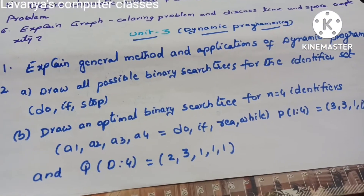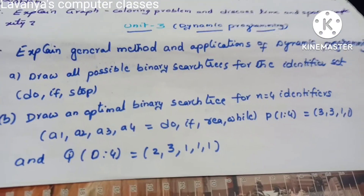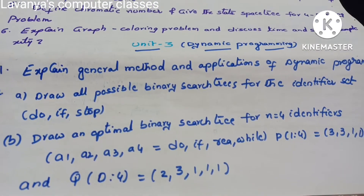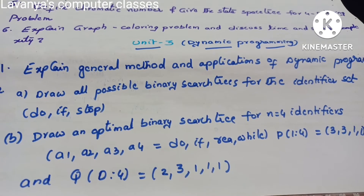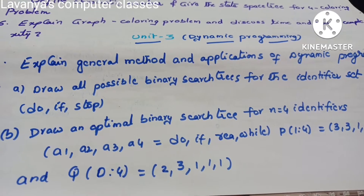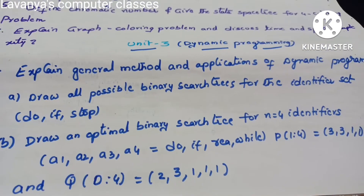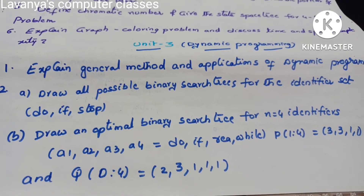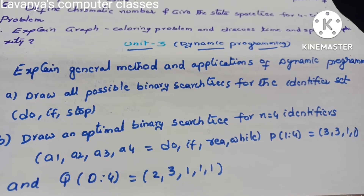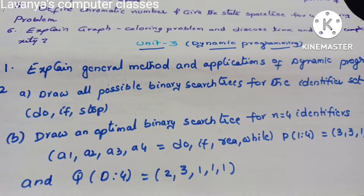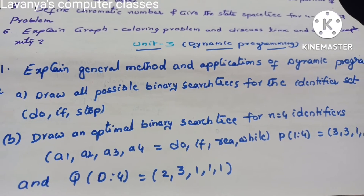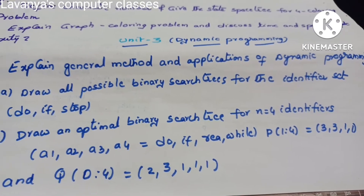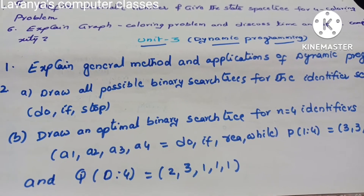Unit 3 is Dynamic Programming. Question 1: Explain the general method and applications of dynamic programming. For all units, go for the general methods and applications of the particular paradigm — dynamic programming, greedy method, whatever it is. Question 2: Draw all possible binary search trees for the identifier set {do, if, stop}. Also: draw an optimal binary search tree for n=4 with identifier set a1, a2, a3, a4 = {do, if, read, while}, p = {1, 4, 3, 3, 1, 1} and q0 to q4 = {2, 3, 1, 1, 1}.